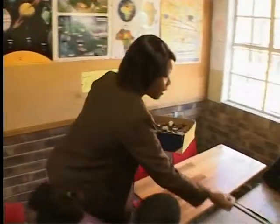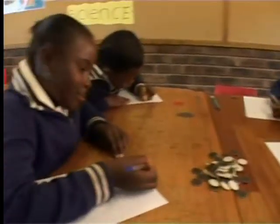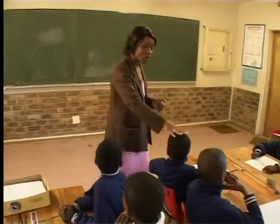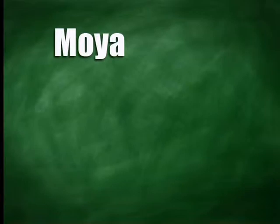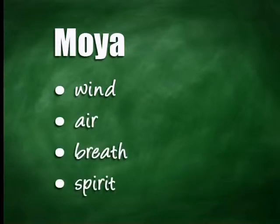Some teachers do it the other way around — they teach in English and then put in mother tongue African words. This can help the learners, but again we must be very careful of the meaning of the words. For example, if the teacher uses the word 'moya' for wind, remember that in other languages the word 'moya' means air, breath, and spirit. So do the learners really know what the teacher means?